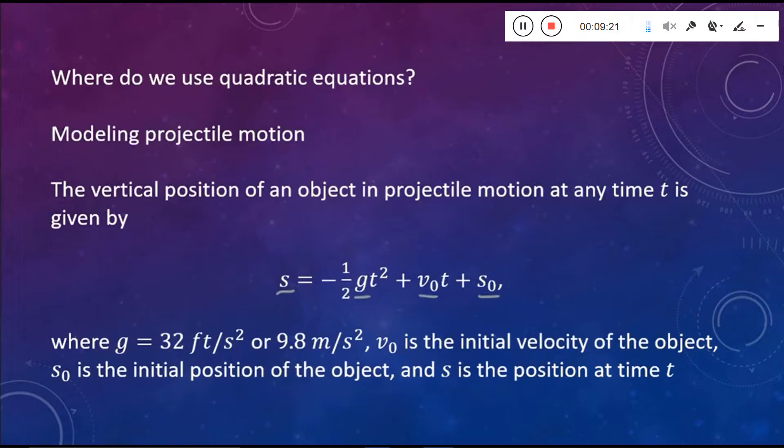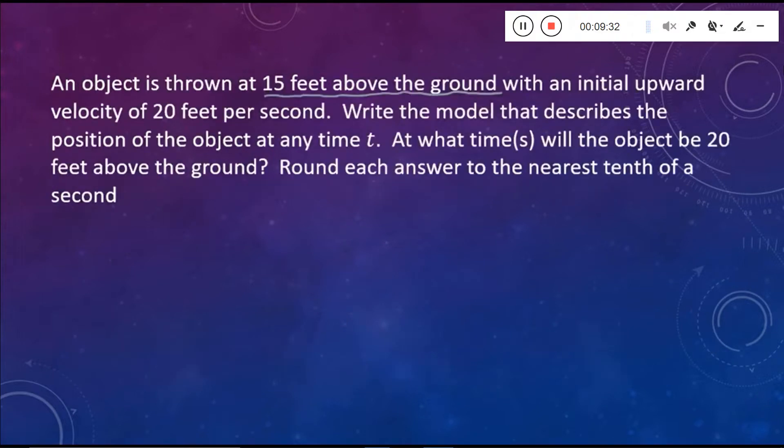Now, lastly, we know that everything is in terms of feet. So when it comes to our g value, do we use 32 or do we use 9.8? Well, since everything is in terms of feet, we want to use 32 feet per second squared. So we're going to have negative one-half times 32, or negative 16 t squared plus the 20t plus the 15. So that's how we compiled our model using the information that was given to us in the problem. So here's our model that we're going to work with for the remainder of this question.